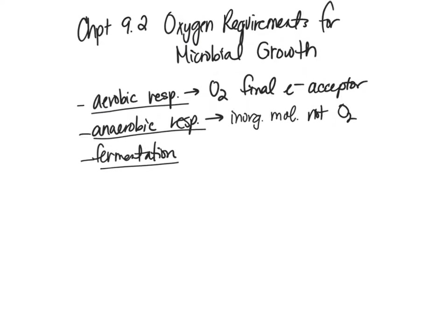When we talk about oxygen requirements, if we're talking about aerobic respiration, an organism that only does aerobic respiration needs oxygen in order to make ATP. On the other hand, if we have an organism that cannot be exposed to oxygen or just doesn't use oxygen, that's because they go through anaerobic respiration — they don't have to be exposed to oxygen.